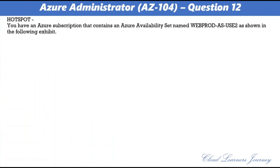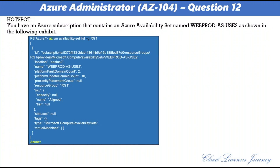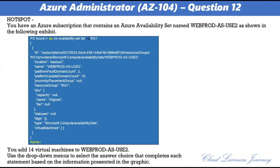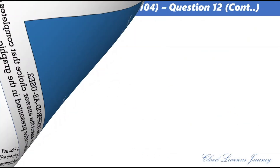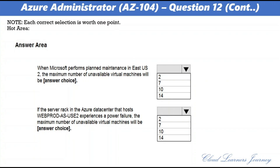Question 12. You have an Azure subscription that contains an Azure availability set named webprod-as-use2 with location east-us2. You add 14 virtual machines to webprod-as-use2. First answer: when Microsoft performs planned maintenance in east-us2, the maximum number of unavailable virtual machines will be 2. There are 10 update domains. The 14 VMs are shared across the 10 update domains, so 4 update domains will have 2 VMs and 6 will have 1 VM. Only 1 update domain is rebooted at a time, so a maximum of 2 VMs will be offline.